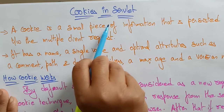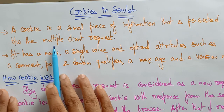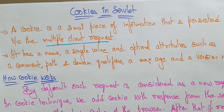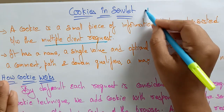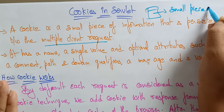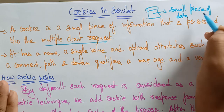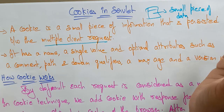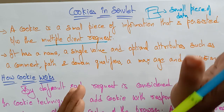A cookie is a small piece of information that is persisted between multiple client requests. Let me explain again clearly. A cookie is a small piece of data sent from a website and stored on the user's computer.